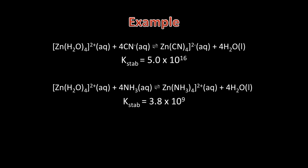Looking at an example, the stability constant for the zinc-2 plus ion with 4 cyanide ligands is much larger than that of the zinc-2 plus ion with 4 ammonia ligands. This shows a strong coordination bond between the zinc-2 plus ion and the cyanide ligands compared with a much weaker bond between the zinc-2 plus ion and the ammonia ligands.